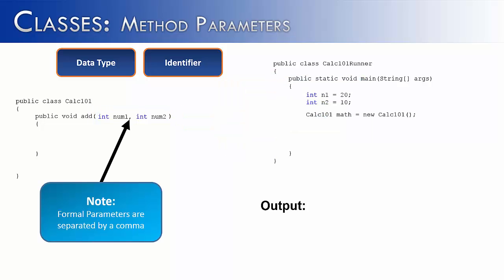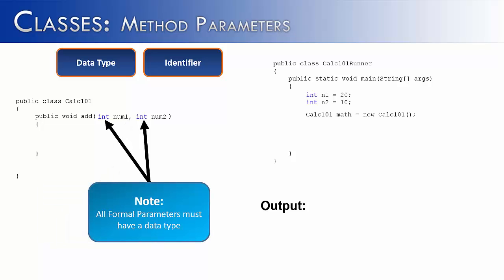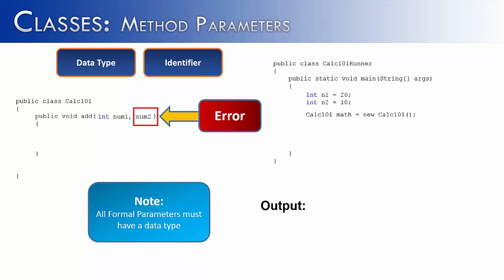Note that formal parameters are separated by a comma — so if you have more than one parameter, you're going to separate it with a comma. Another important note is that all formal parameters must have a data type. When declaring a value in a method, sometimes you can leave off a data type and it is assumed to take on the data type before it. But with formal parameters, you can't do that — it would result in an error. Every single formal parameter has to have a data type; it will not assume the data type of the first one applies to the second.